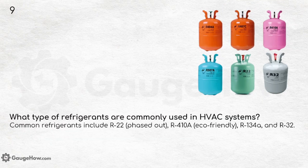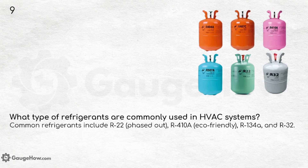What type of refrigerants are commonly used in HVAC systems? Common refrigerants include R22 (phased out), R410A, R134A and R32. Refrigerants are used to transfer heat from one location to another, allowing for cooling and temperature control. They are essential in refrigeration systems, air conditioners and heat pumps to facilitate the cooling process.